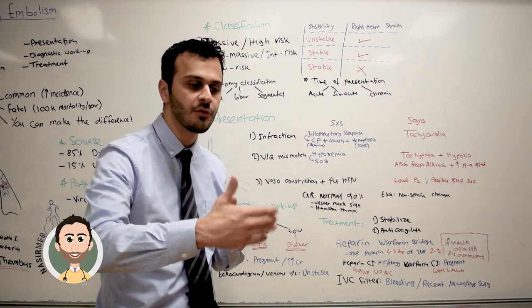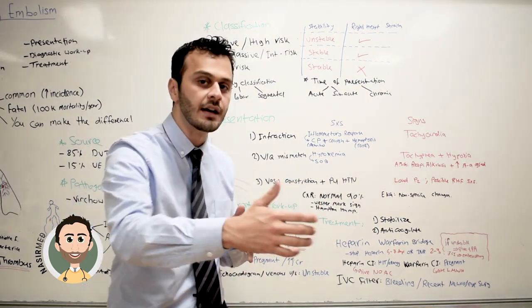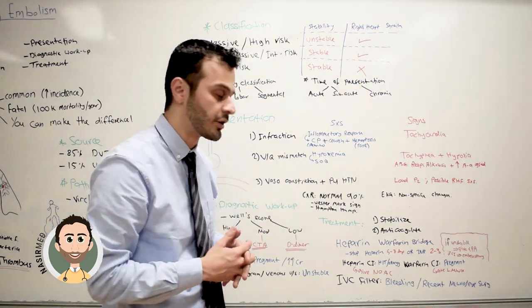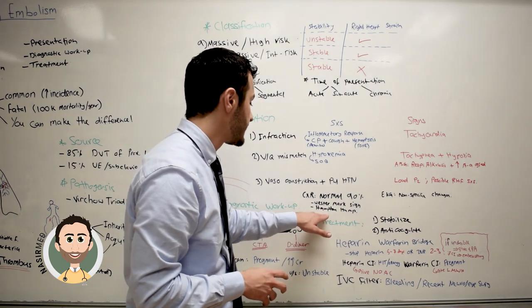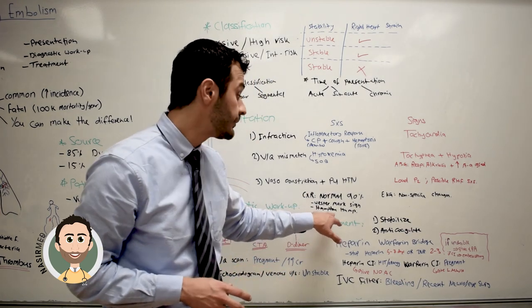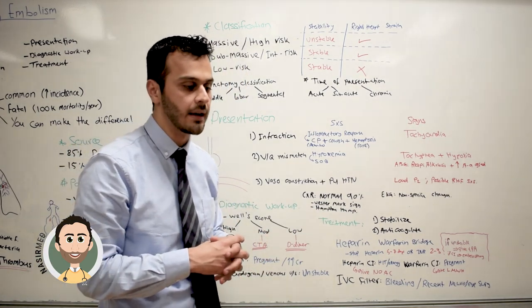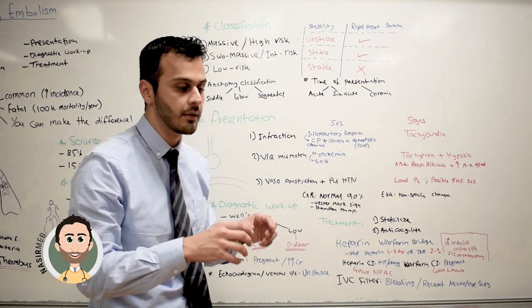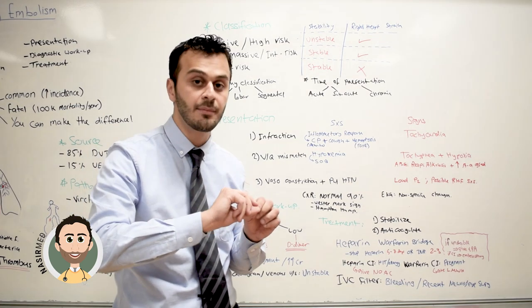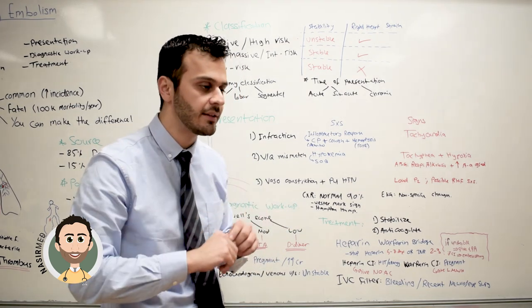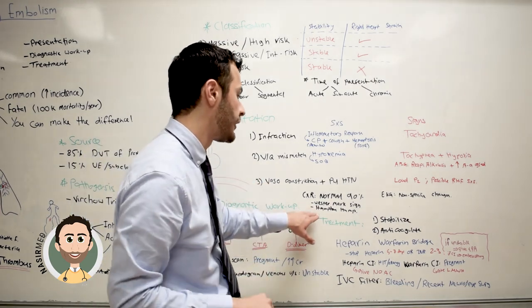It can also present with a Hampton hump — basically a wedge-shaped infiltrate that is indicative of the area of infarction.